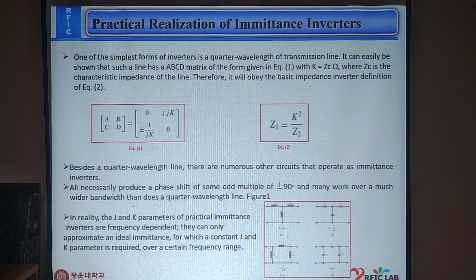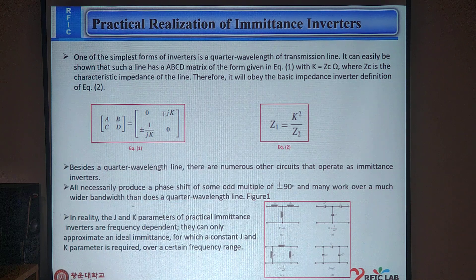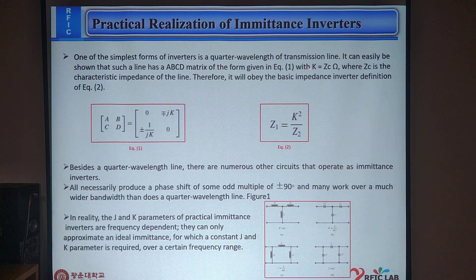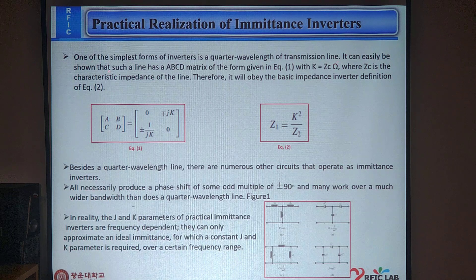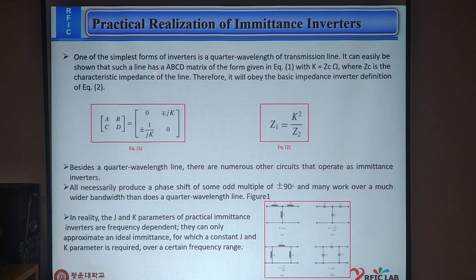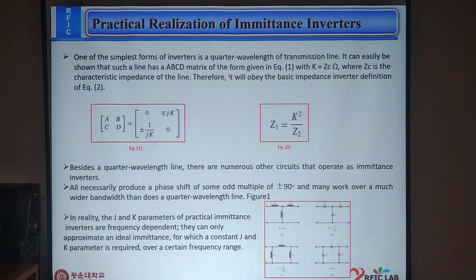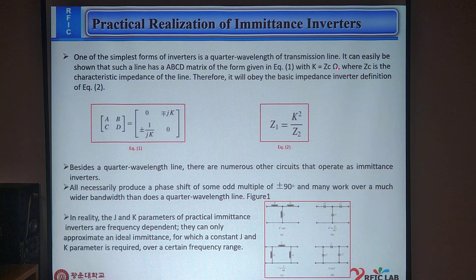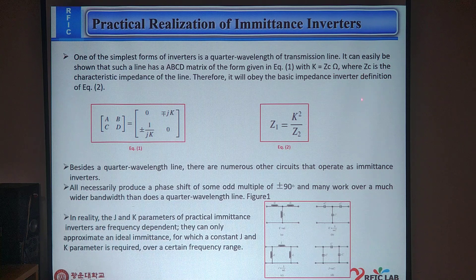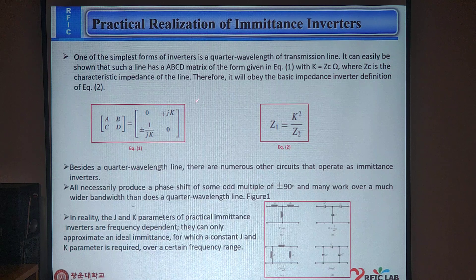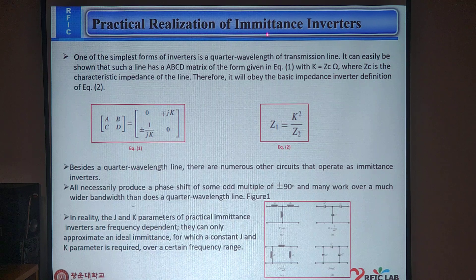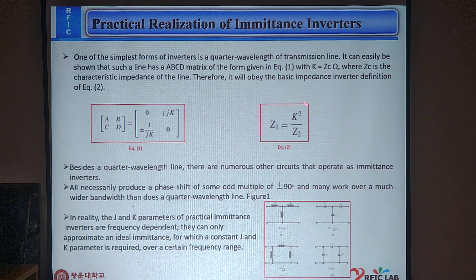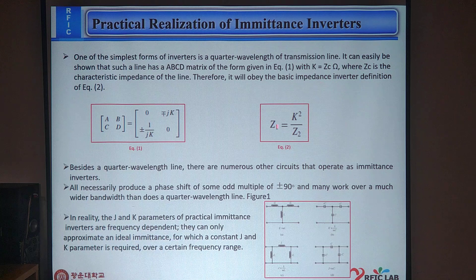Next content is practical realization of imittance inverter. One of the simplest forms of inverter is a quarter wavelength of transmission line. It can easily be shown that such a line has ABCD matrix from the given Equation 1, with K = Zc Ohm, where Zc is the characteristic impedance of the line. Therefore, it can be impedance inverter definition by Equation 2. Here, Z1 = K²/Z2.